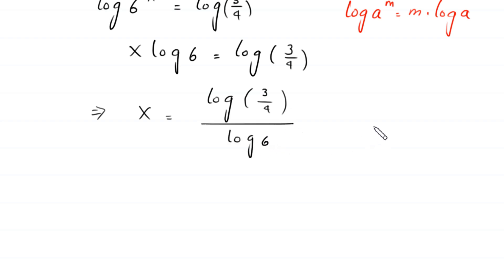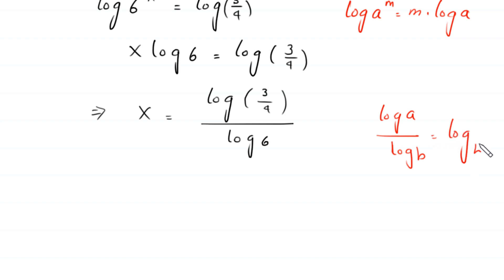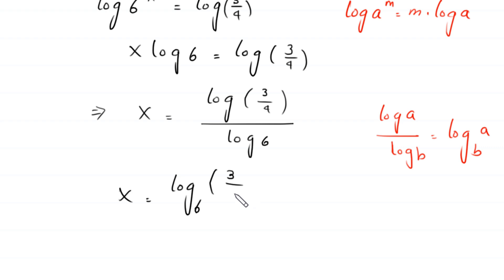Using the change of base property, log(a) divided by log(b) equals log base b of a, this simplifies to x equals log base 6 of (3 over 4). This is the final answer.